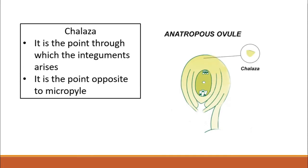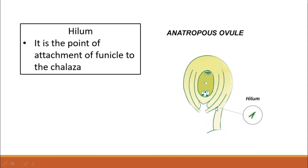The micropyle is the opening at one pole of the ovule. Just opposite to it is the chalaza — just like the south pole is opposite to the north pole. The chalaza is the point from which the integuments arise. The hilum is the point of attachment of the funicle to the chalazal region of the body.